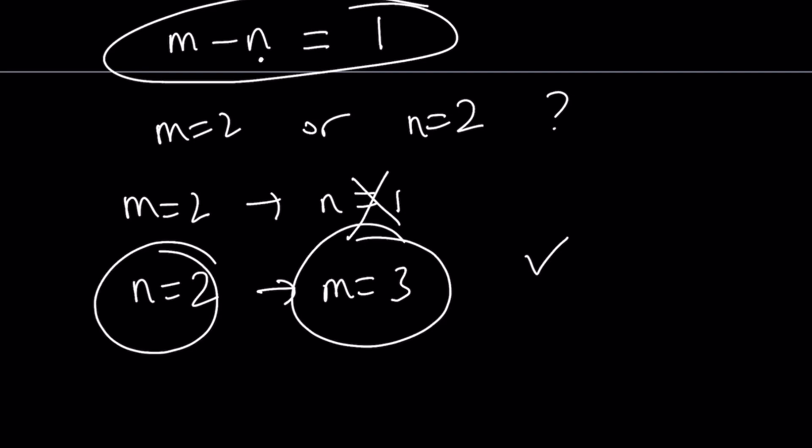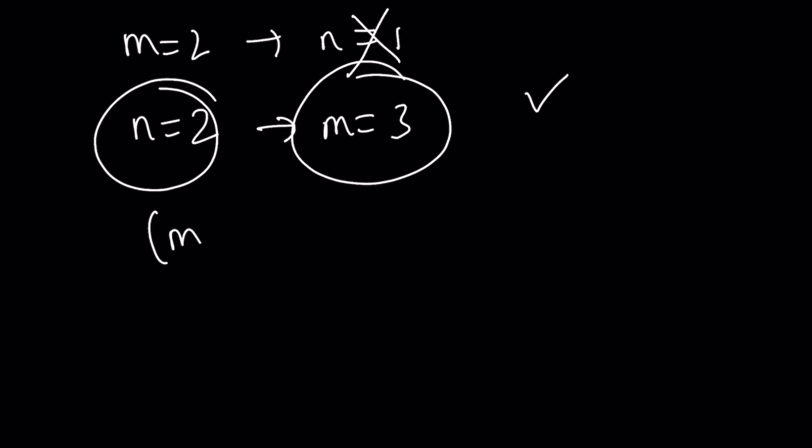We're done. So the values we're looking for, m comma n, are going to be 3 comma 2.